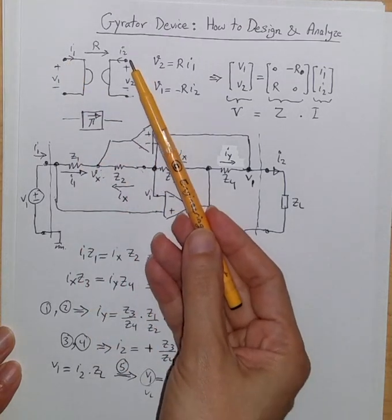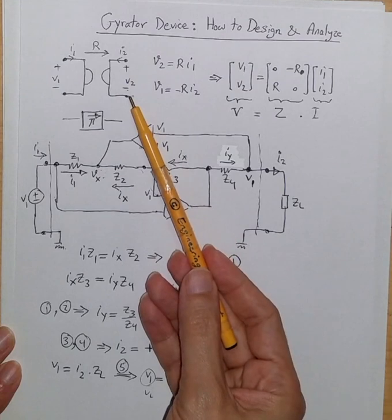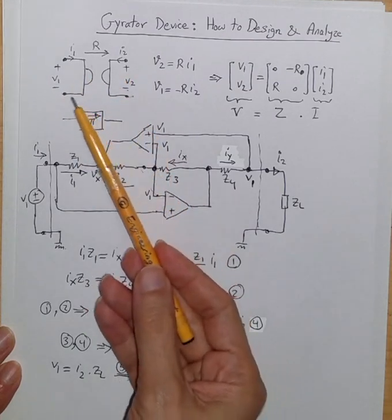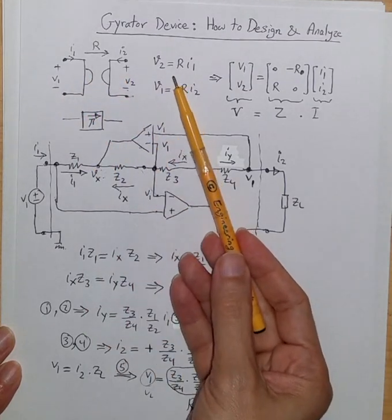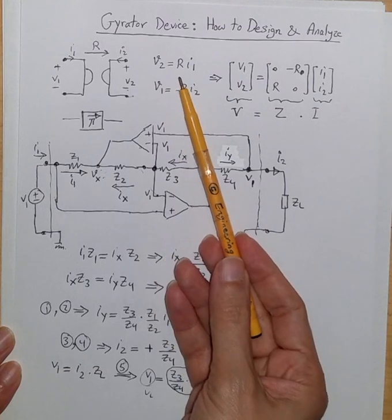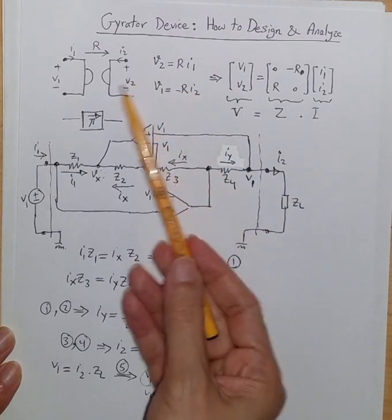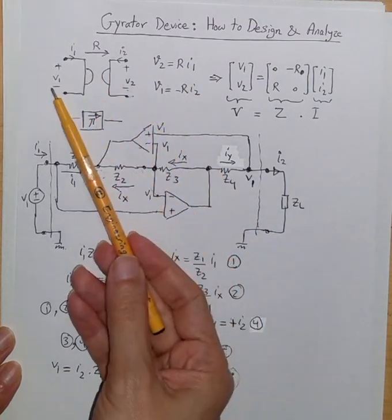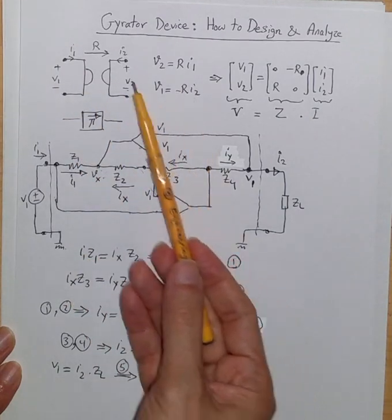Voltage V1, V2 and I2 at port 2, and the relationship between these voltages and currents of this two-port device is like this. So we have V2 equal to R times I1, and V1 is equal to negative R times I2.